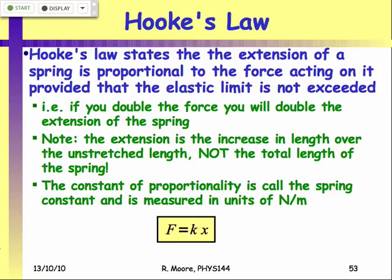It goes to 49 — some experimental error going on. Part of the problem is trying to hold it level. With one mass it reads 16 centimeters extension; with two masses it reads 29. So that's 13 centimeters extension. And 29 plus 13 would be 42, and it reads 51. So not perfect, but not too bad.